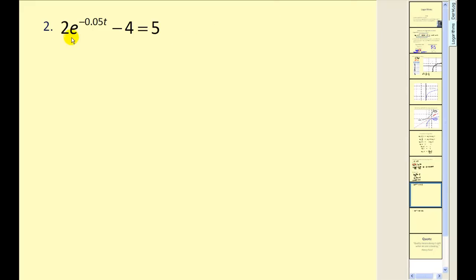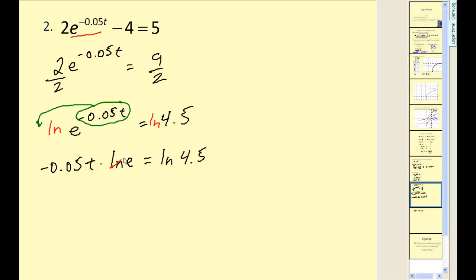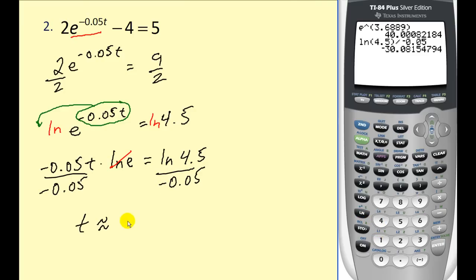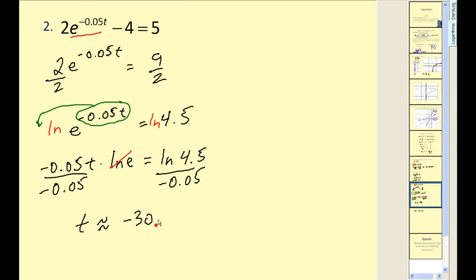Let's take a look at another. First step, we need to isolate the exponential part. So we need to get rid of this minus four and also this two here. So step one will be to add four to both sides. So this would be equal to nine. Now we need to divide by two. This would be equal to 4.5. And again, what I'm going to do is be consistent and just take the natural log of both sides. Apply that power property. I take this exponent and move it to the position of the coefficient. But we know natural log e is equal to one. So now we just need to divide by negative 0.05. So the value of t would be approximately negative 30.0815.